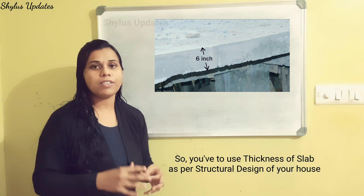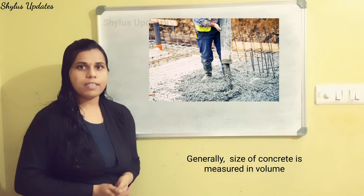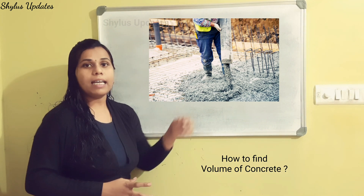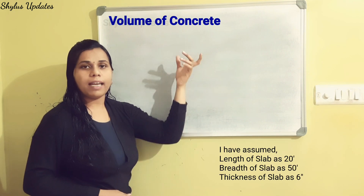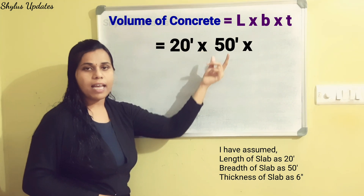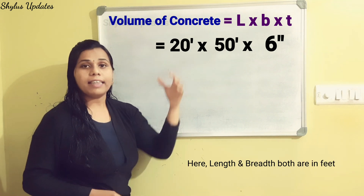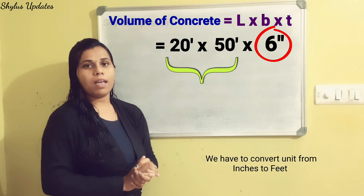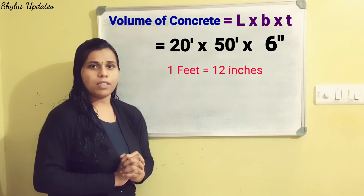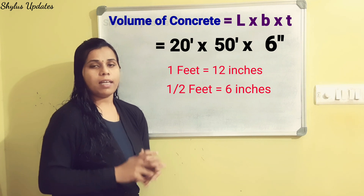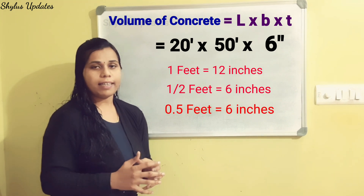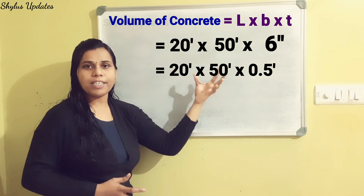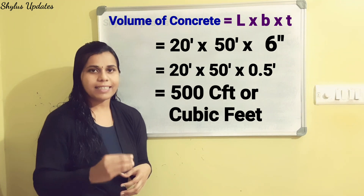This 6 inches is just an assumption. Don't use this same value for your house — it varies from building to building, so you have to use the thickness of slab as per the structural design of your house. The size of concrete is measured in volume. Volume = Length × Breadth × Thickness = 20 feet × 50 feet × 0.5 feet (since 6 inches = 0.5 feet). When we multiply this, we get 500 cubic feet. This is the volume of concrete.